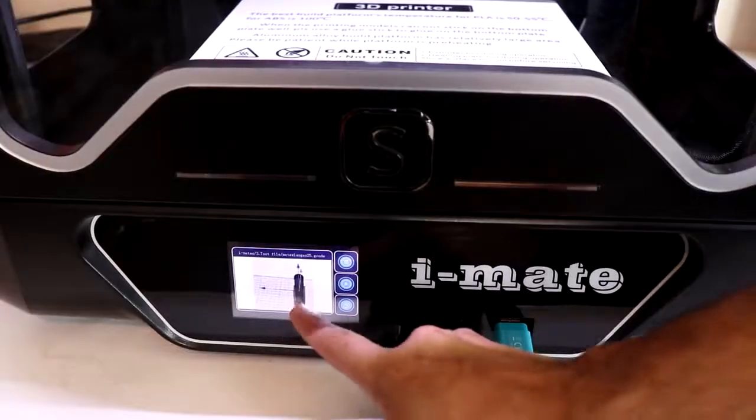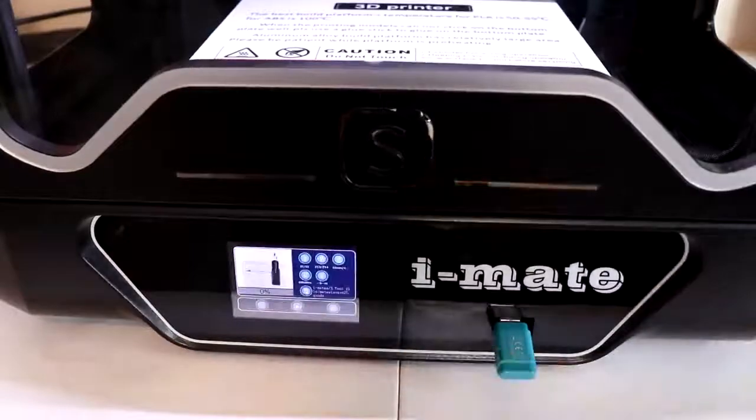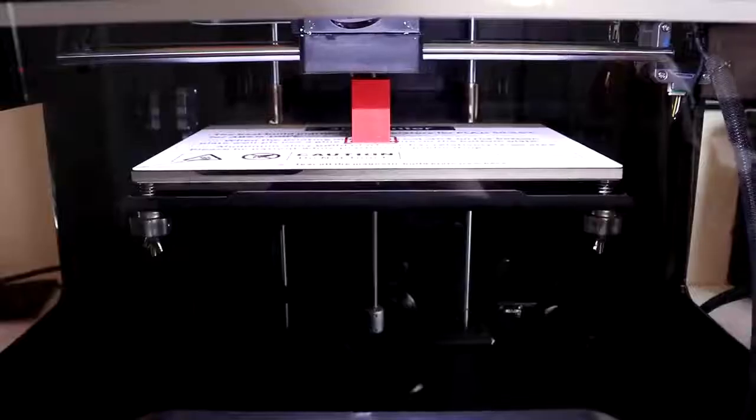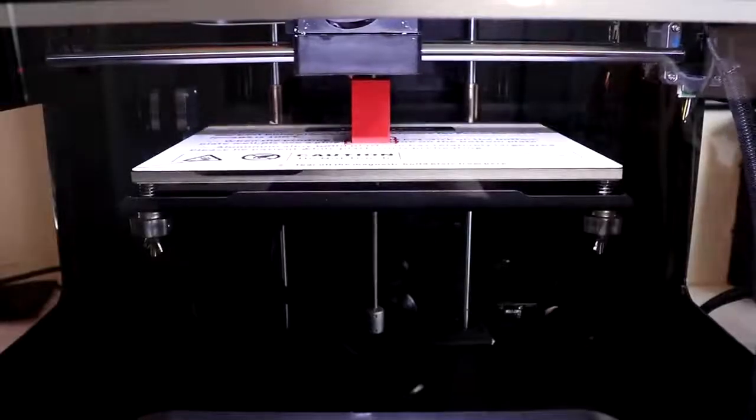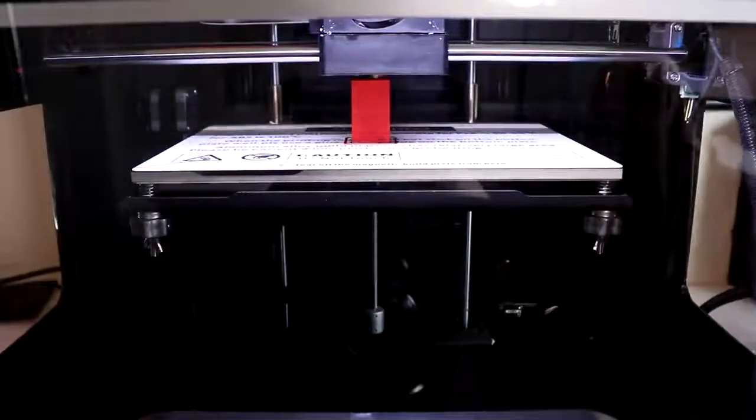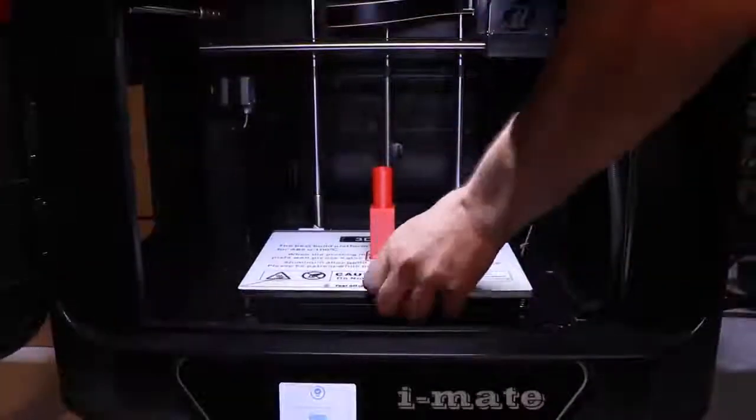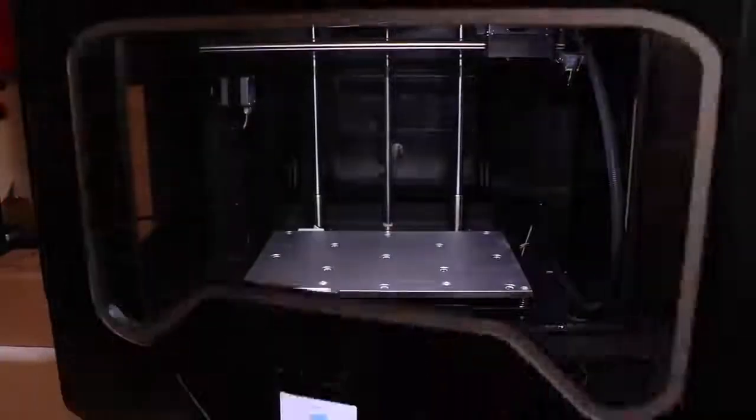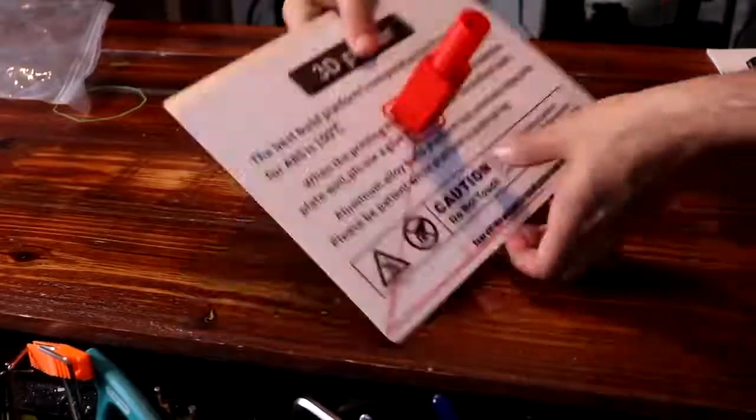First things first, I get to printing their included test file. This printer can also have the sides and top removed for when you're printing PLA since you don't want to heat a chamber when printing in that material. This first test came out great but it kind of shocked me just how well the material stuck to the build plate.